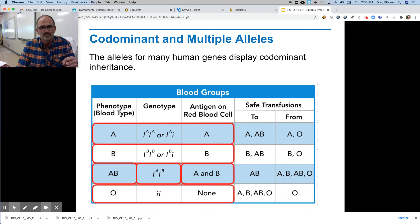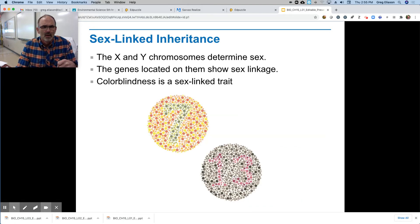All right. Colorblindness is a very common sex-linked trait, and it typically occurs in males because the X and Y chromosomes determine sex. The genes located on them show a sex linkage, and colorblindness then is on that X-linked trait. And so if you see the number 7 and 13 here, you're not colorblind. If you don't see the number 7 and 13, you may be red-green colorblind.